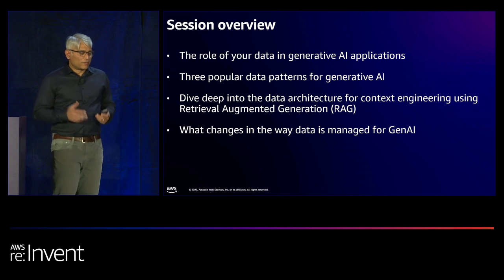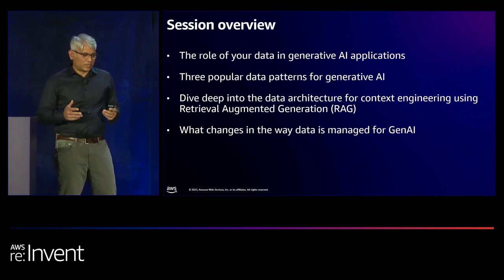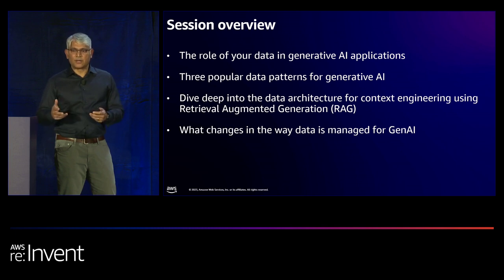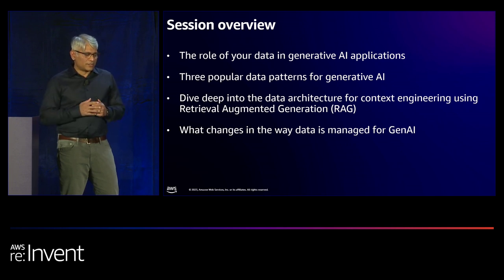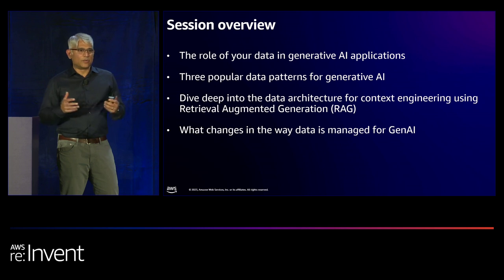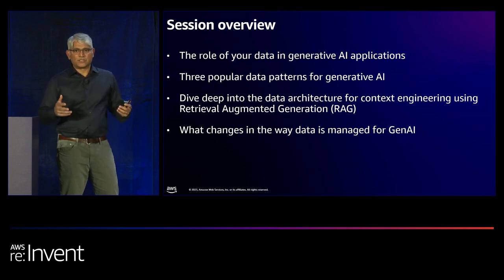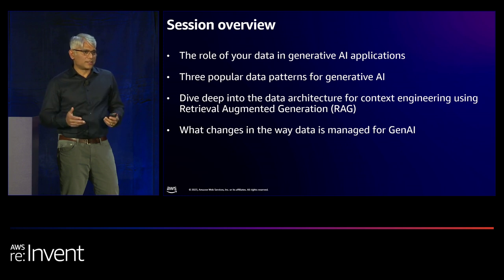In terms of the agenda: we'll first think about the role of your data in Gen AI applications — how you can empower your Gen AI applications with your data and context. We'll cover three patterns of how to feed your data into your Gen AI system or large language model. Then we'll dive deeper into data architecture for context engineering using retrieval augmented generation, or RAG. Finally, we'll discuss how your data strategy should change for Gen AI.